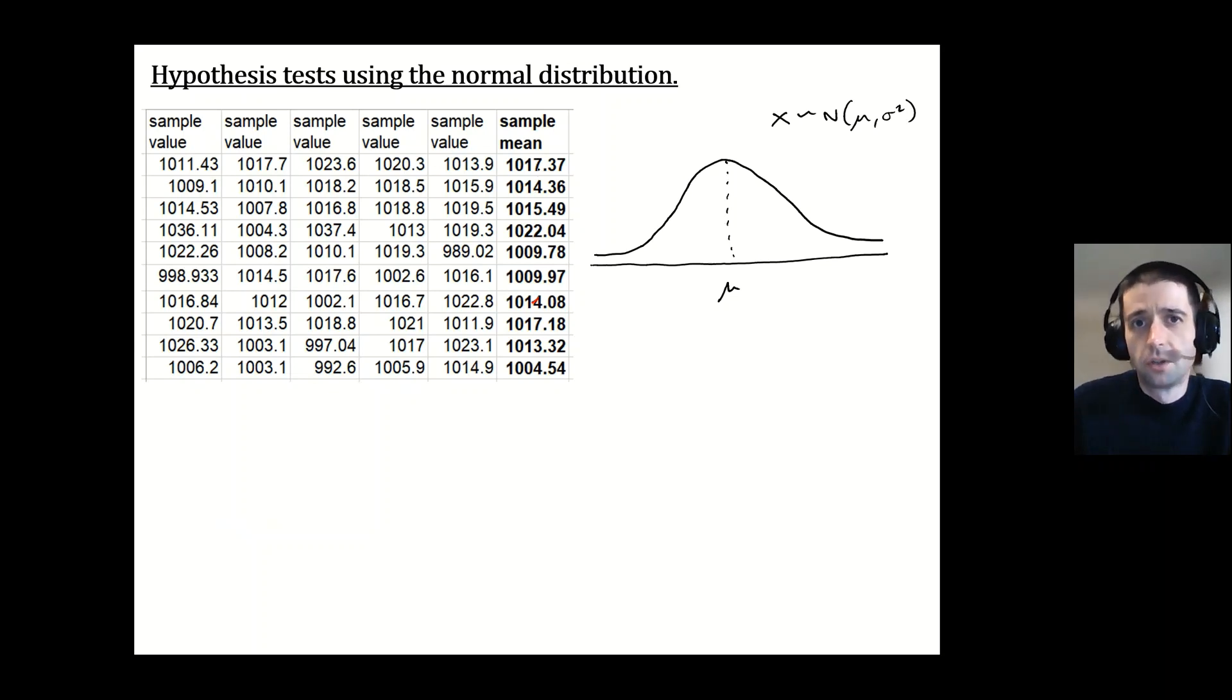Now, if we were to plot all these sample means into a normal distribution, what we would find is that the mean of all those sample means would be the same as the mean of the population. But the distribution would be significantly squashed. So it wouldn't have as much variance in all these sample means. And what would then happen is we could say that the distribution of the sample means follows a normal distribution. It has the same mean as the population, but the variance of the sample means is inversely proportional to the size of the sample. So we say that it's following a variance of σ² over n.